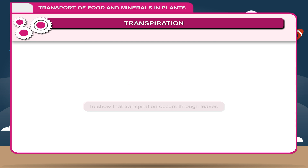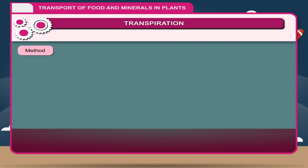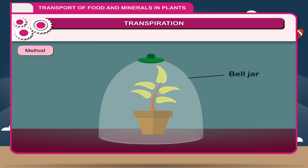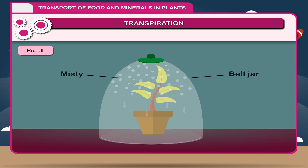Activity — To show that transpiration occurs through leaves. Method: Take a well-watered potted plant on a glass plate and cover it with a dry bell jar. Make the apparatus airtight using Vaseline. After some time, the bell jar becomes misty and small droplets appear on its inner surface. Result: This shows that water vapor formed during transpiration has condensed on the inner surface of the bell jar in the form of droplets.